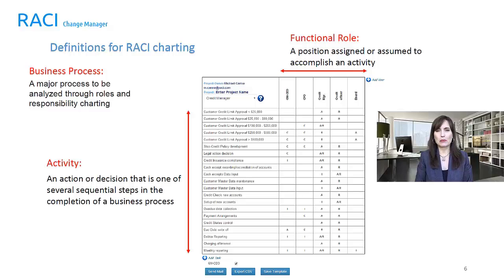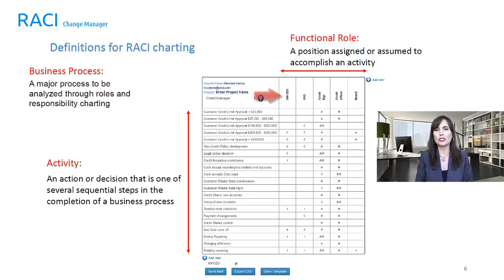For this example, I'm using the RACI.com RACI charting tool. The tasks we are looking at are typical of a credit manager. The activities or tasks are listed down the left-hand column, which can be sequential steps if relating to a process or project, and order of importance if relating to a role or activity. Functional roles are listed across the top, and are those assigned or assumed to be involved in each activity. Notice there is only one A per activity.